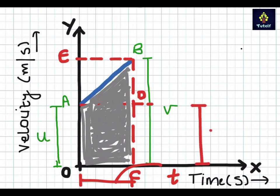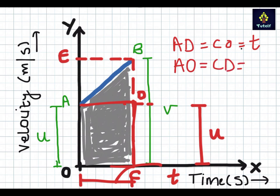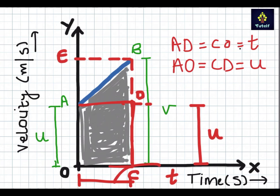This will be U because since ADCO is a rectangle so AD equals CO equals T. Since it's a rectangle, similarly AO or OA equals CD equals U since that is the initial velocity. Now after we have drawn the graph let's go into the calculation part.